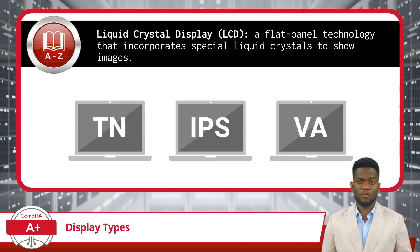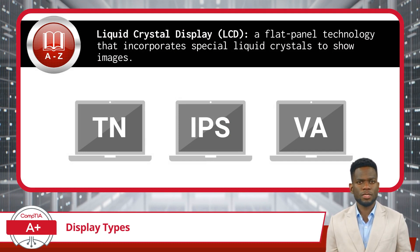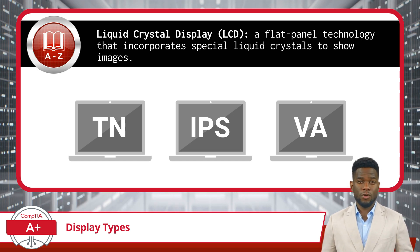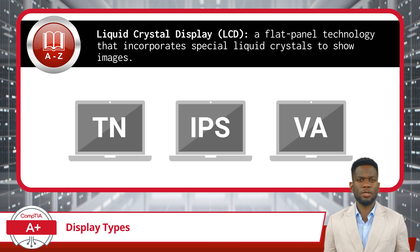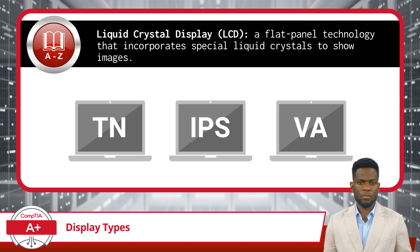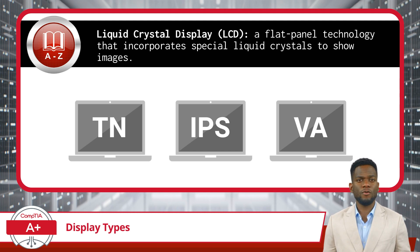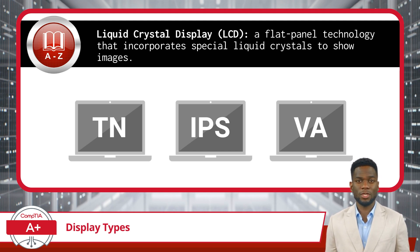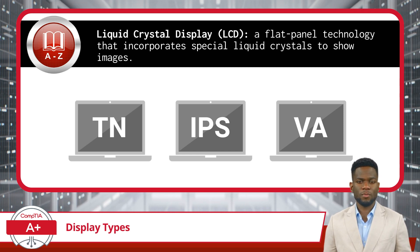LCD stands for Liquid Crystal Display and is a flat-panel technology that incorporates special liquid crystals to show images. There are a few different types of LCD displays. IPS, or in-plane switching, is the fancy version. It's really good at showing bright, true colors from all angles, so if you move around or aren't sitting right in front of it, the picture still looks good. People who need to see colors perfectly, like artists or designers, really like this type.